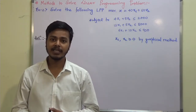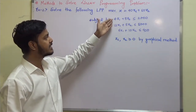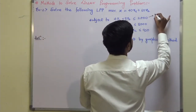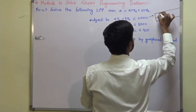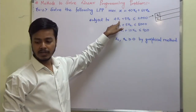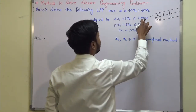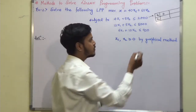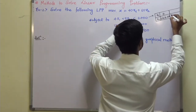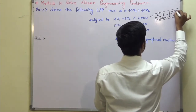The very first step of the graphical method is to draw the graph. To draw the graph we look at the constraints — these are the lines. To draw these lines we need at least two points. For the first constraint, 4x1 + 9x2 = 2000: put x1 = 0, we get x2 = 2000/9 ≈ 222.22. Put x2 = 0, we get 4x1 = 2000, so x1 = 500.